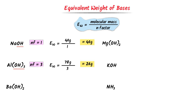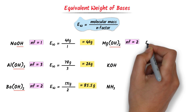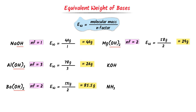In case of barium hydroxide, we can see that there are 2 hydroxide ions. Its N factor is 2. Its equivalent weight is equal to the molecular weight, which is 171 gram, upon 2. After calculation, I get 85.5 gram. So the equivalent weight of barium hydroxide is 85.5 gram. In case of magnesium hydroxide, there are 2 hydroxide ions. Its N factor is 2. The equivalent weight of magnesium hydroxide is 28 gram.